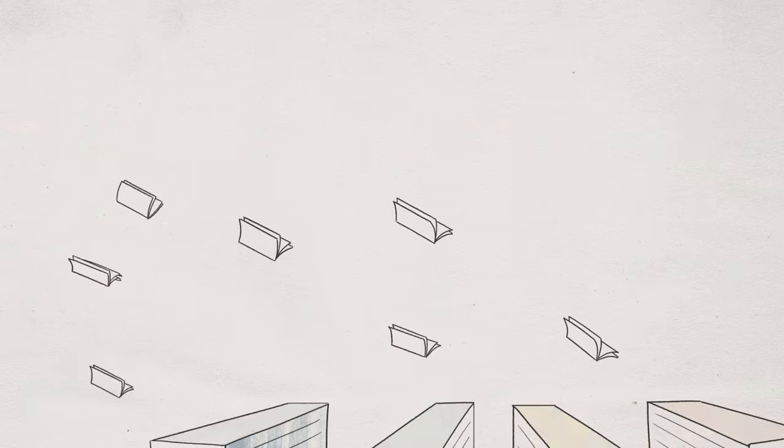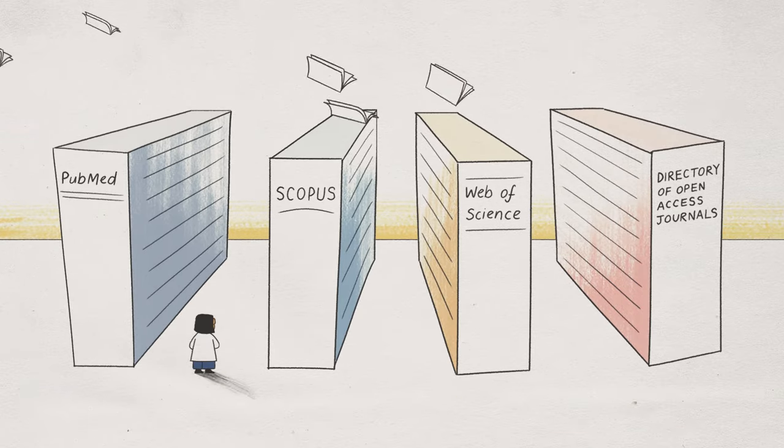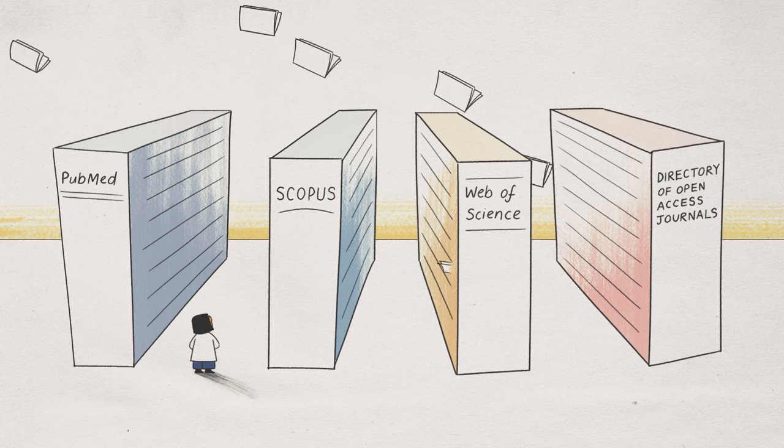Journals that publish high-quality research will be found on a number of reputable indexes like PubMed, Scopus, Web of Science, and the Directory of Open Access Journals.